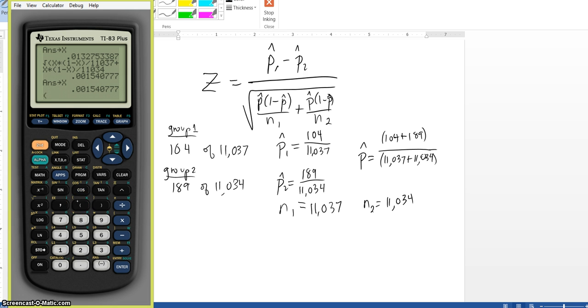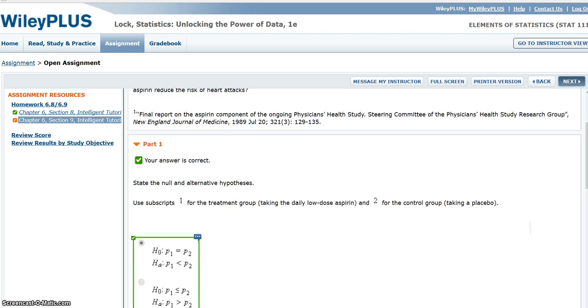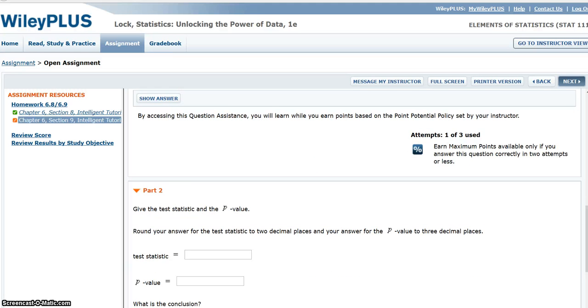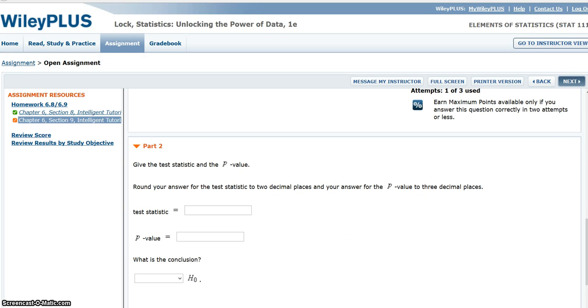So, I'm going to take my P1 hat, 104 divided by 11,037, minus my P2 hat, 189 divided by 11,034. And then I'm going to divide it by that standard error that I found. And that gives me a test statistic of negative 5.001. It says to round my answer for the test statistic to two decimal places, so that would be negative 5.00.